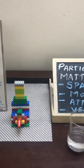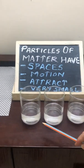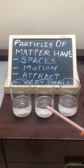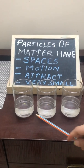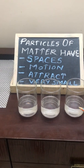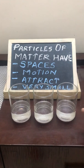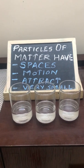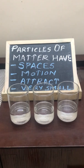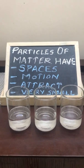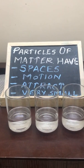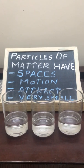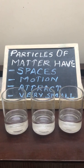I have taken three equal glasses, each with an equal measured quantity of water — approximately 100 ml of water in each. The first characteristic of particles of matter says that particles of matter have spaces between them. So how do we know that they have spaces between them?